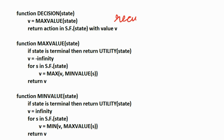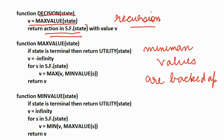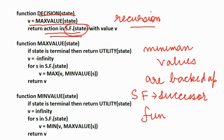The algorithm proceeds recursively all the way down to the leaves of the tree, and then the Minimax values are backed up through the tree as the recursion unwinds. The decision function takes as input the state and returns an action from the successor function. It computes the maximum value v of the state, and returns the action associated with that value — which is the final Minimax decision.